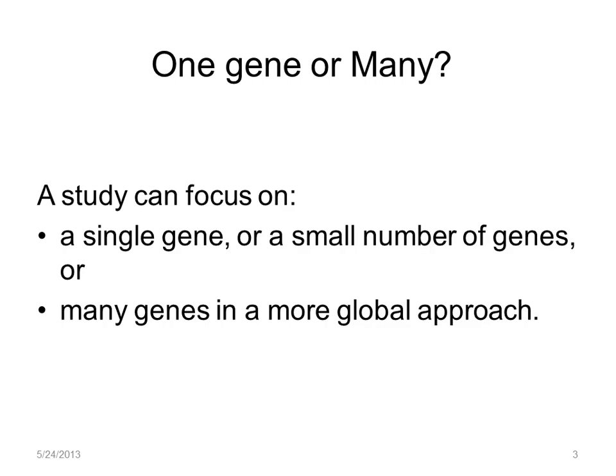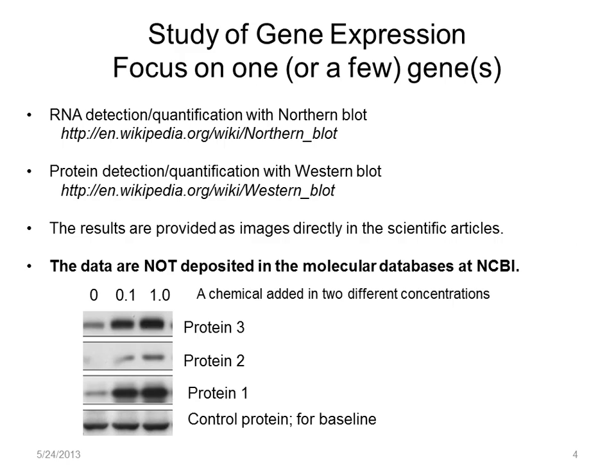You can artificially group studies into those that focus on a small number of genes and those that try to sample as many genes as possible in the tissue or cell type being investigated. These older but still useful techniques, northern and western blots, allow a qualitative measure of changes in gene expression, but these types of image data are not deposited at NCBI.